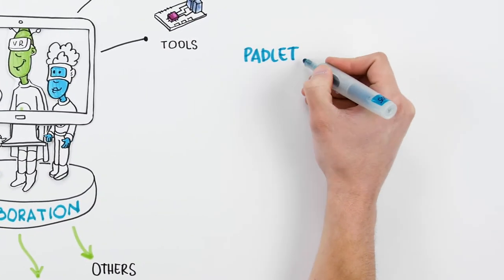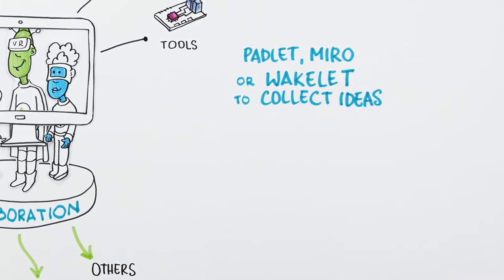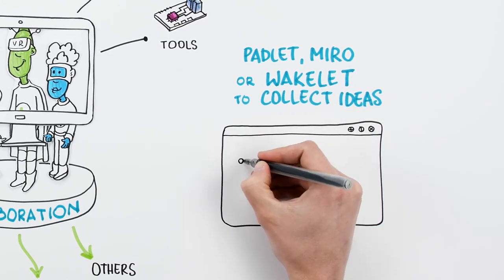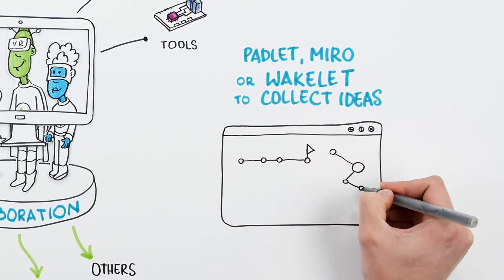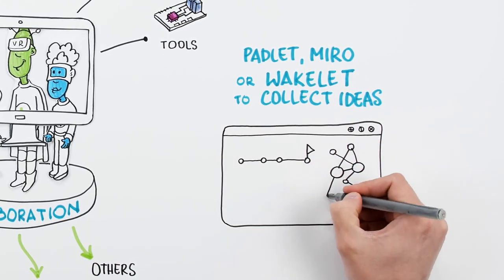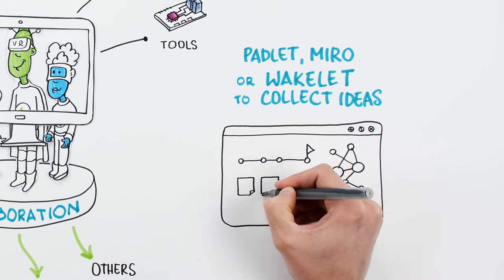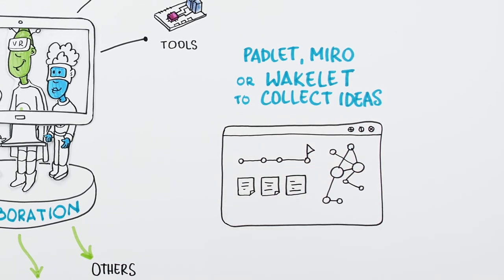Padlet, Miro or Wakelet provide space to collect and map existing practices, challenges and questions from youth workers. Whiteboards can be used to curate content.